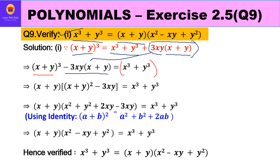Now we observe (x plus y) whole cube on the left and (x plus y) raised to power 1. We take (x plus y) raised to power 1 outside, leaving (x plus y) raised to power 2 inside the bracket, along with minus 3xy. The right hand side remains x cube plus y cube.